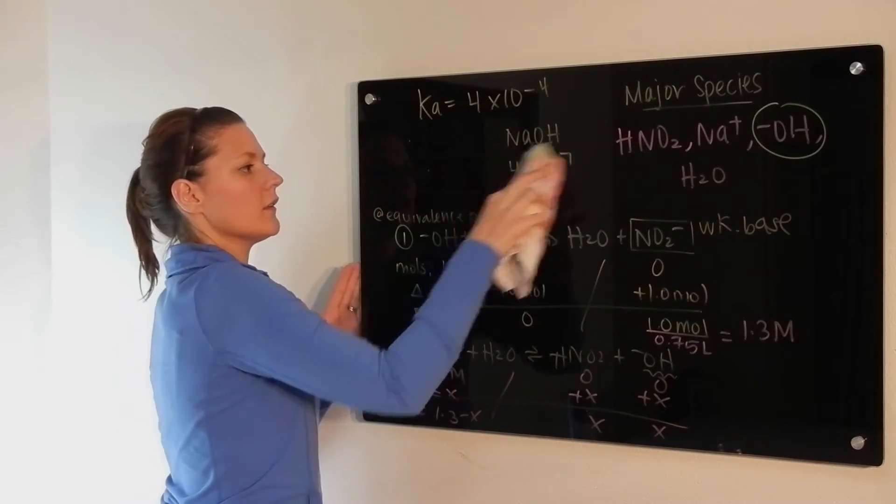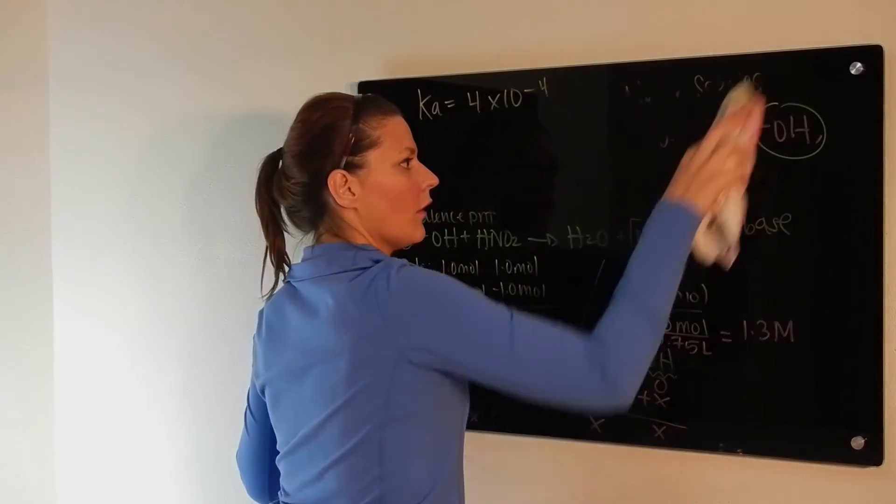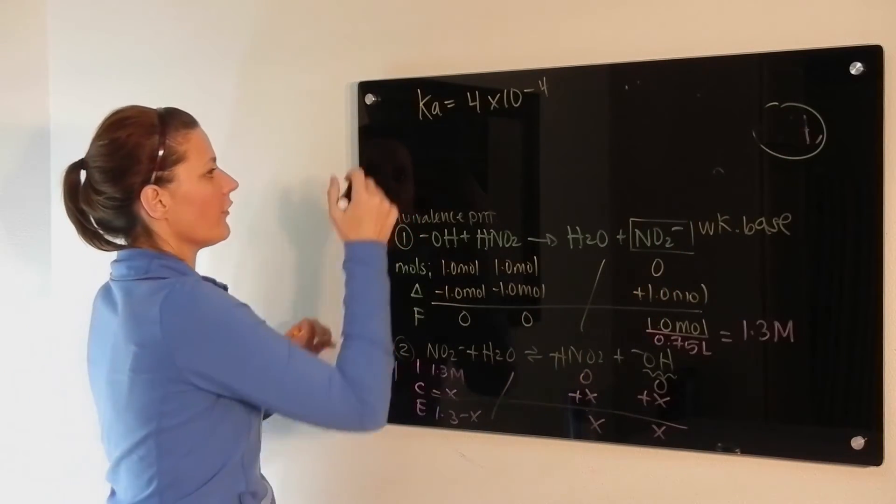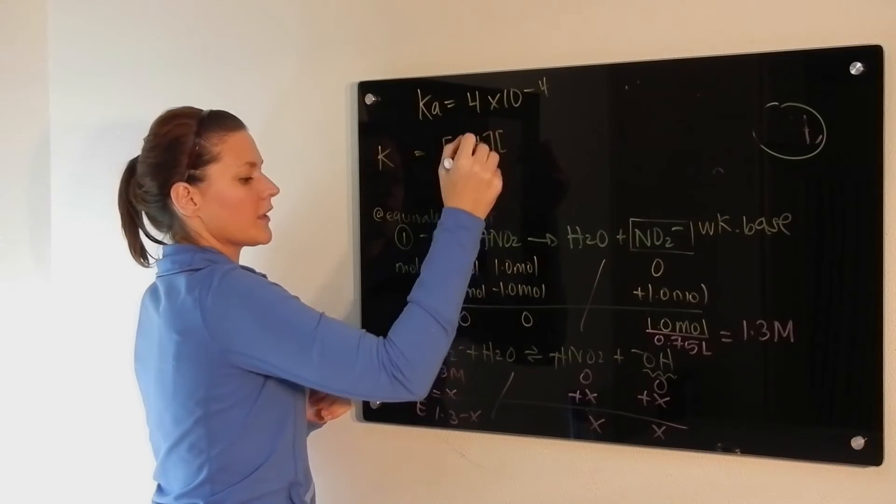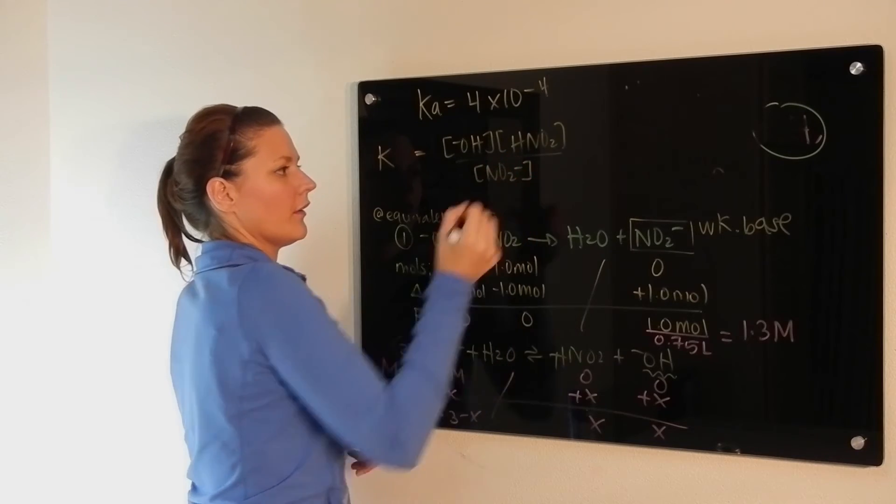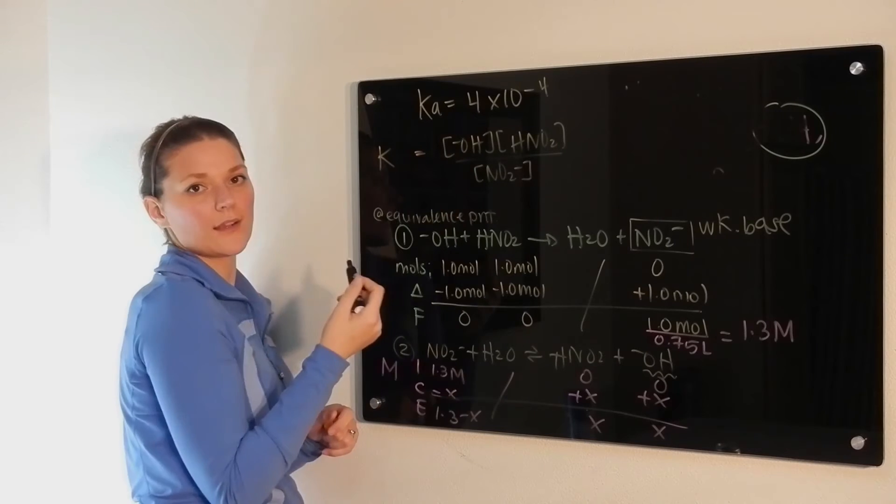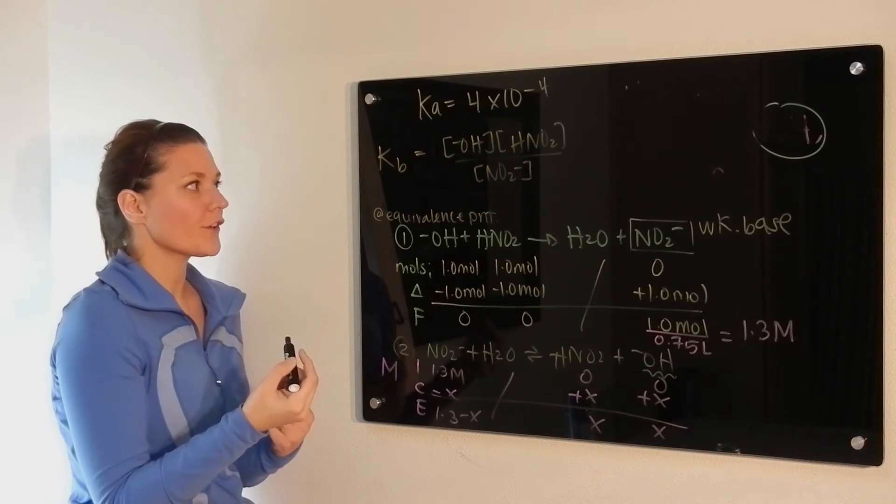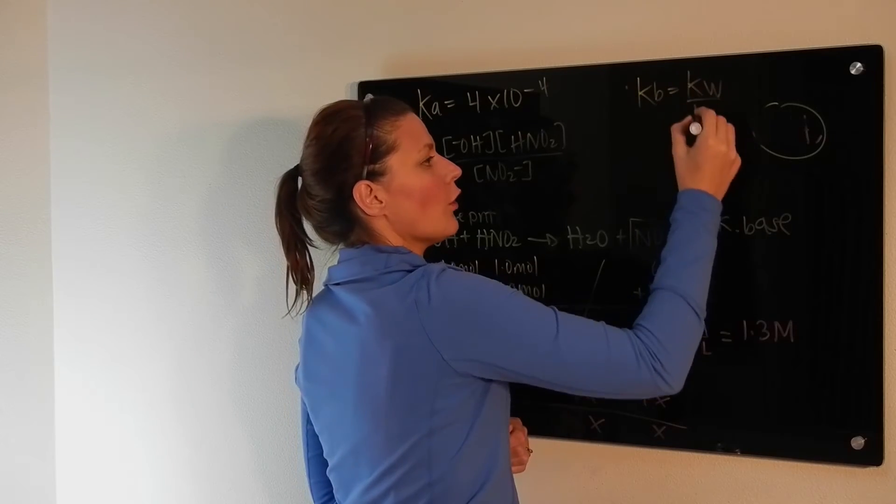So the next phase is, we need to take that equilibrium row and plug it into our expression for K. Okay, so we have our K expression would be the concentration of hydroxide times the concentration of the nitrous acid all over the concentration of your nitrate. Don't forget that this equation here contains hydroxide. So you do not want to use Ka. You need to use Kb, which means first step is you have to solve for Kb.